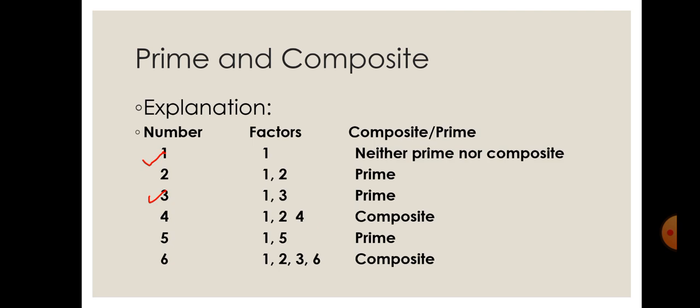On this slide you can see I have written a few numbers in the first column, whereas in the second column I have written the factors, and in the third column we are going to decide whether the given number is a prime number or a composite number according to the definitions.